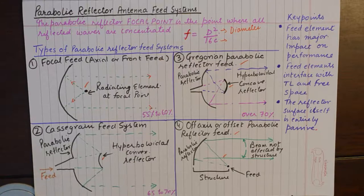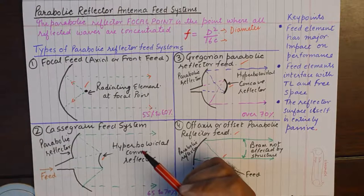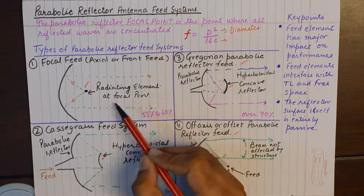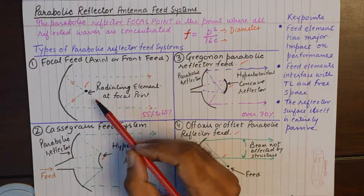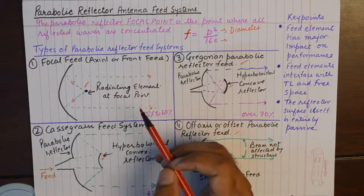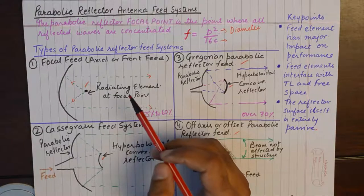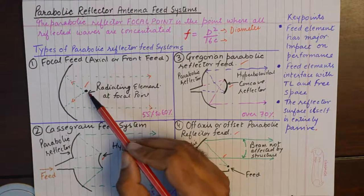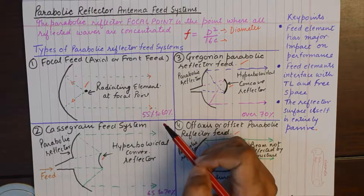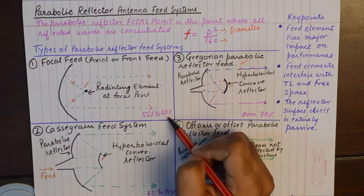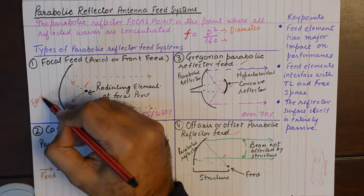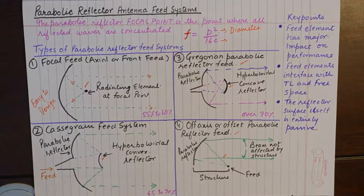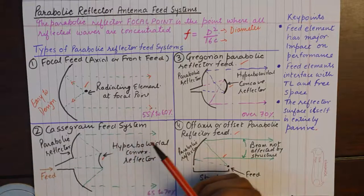The first feed system is the focal feed system, and it is the simplest of all the feed systems. Here, we simply place the radiating element at the focal point, because it aligns perfectly with the theory of a parabolic reflector antenna. Placing the feed at the focal point makes a whole lot of sense and does the job well. The efficiency of this system is 55 to 60%, but its main advantage is that it is easy to design.